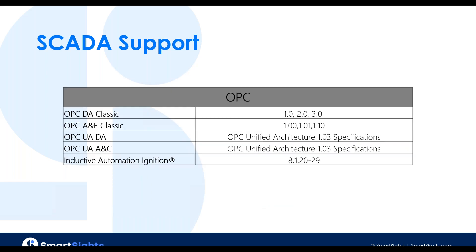We do have an expanded OPC portfolio. We can connect to OPC DA and OPC UA DA, OPC A&E and OPC UA A&C. If you're an Ignition user and want to connect to WIN-911, we have built an OPC UA server for it — you embed it into your Ignition application, then use our OPC UA Alarm and Conditions client to connect, pulling alarms in as if it were a native SCADA connection. That's pretty exciting.